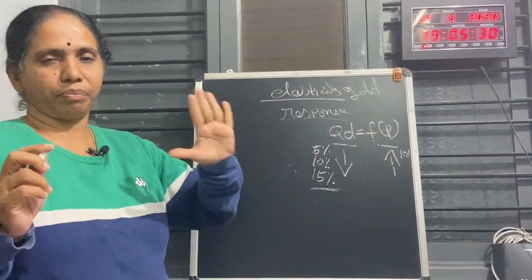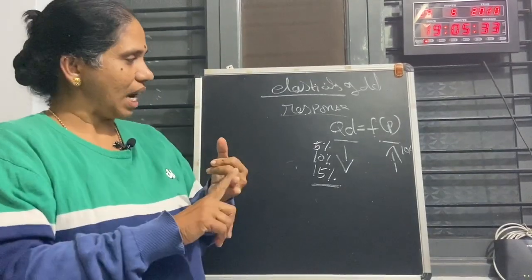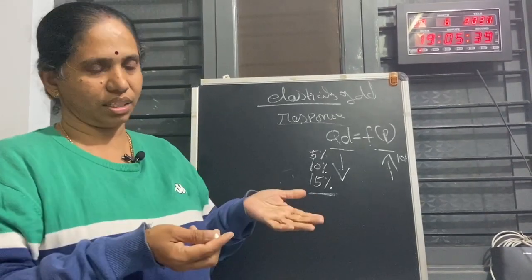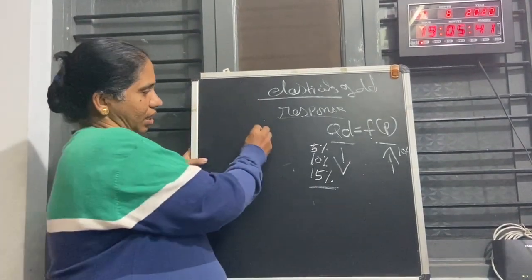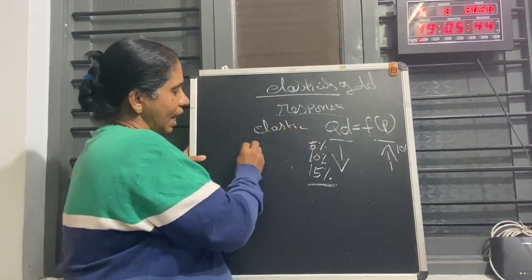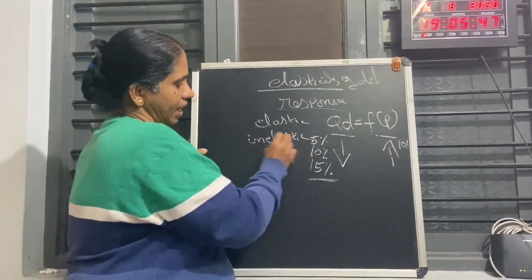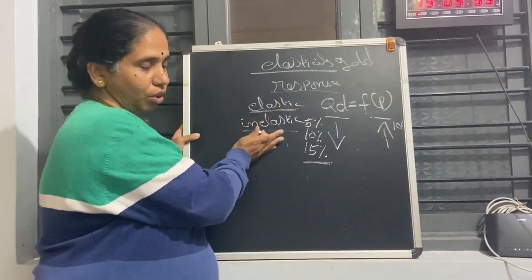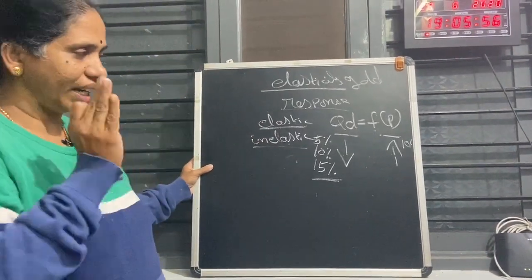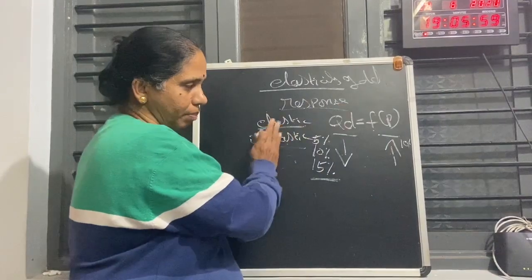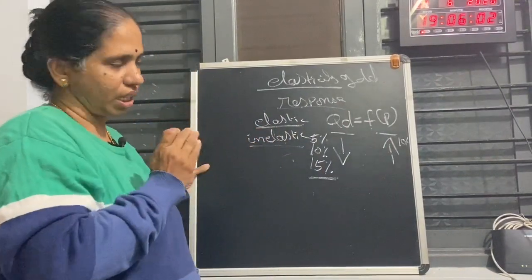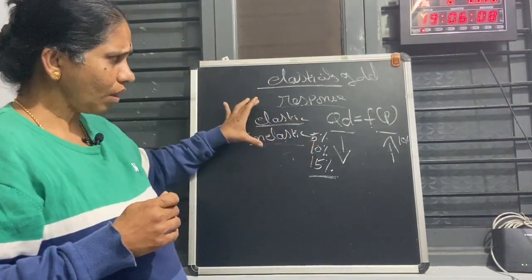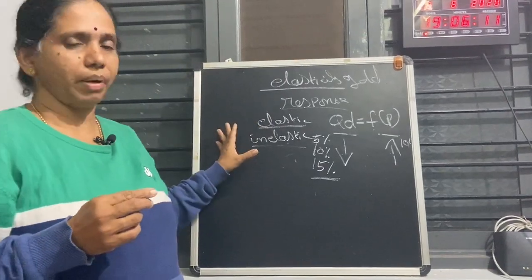There are five types of price elasticity: perfectly elastic, perfectly inelastic, unitary elastic, relatively less elastic, and relatively more elastic. Generally, elastic means demand is more — the response is more. Inelastic means demand is less — the response is less. Don't confuse yourself. We are talking only about how much the quantity demanded will change because of a change in price. If it changes more, we call it elastic; if it changes less, we call it inelastic. This concept was first used by Alfred Marshall.